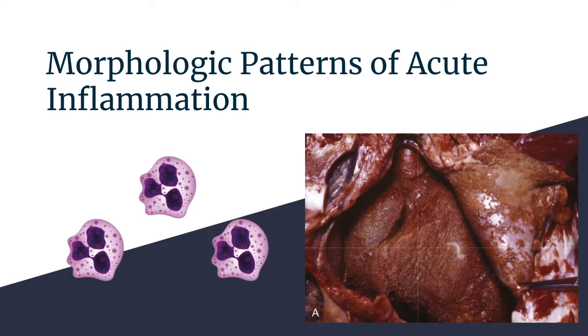In this video, I'm going to tell you about the different morphological patterns of acute inflammation, which include serous, fibrinous, and purulent inflammation, so you can recognize them and better understand their underlying causes.